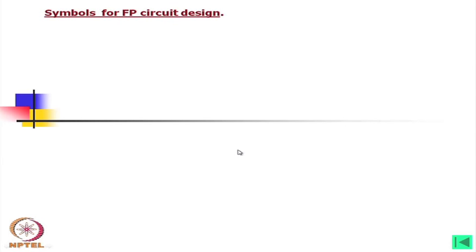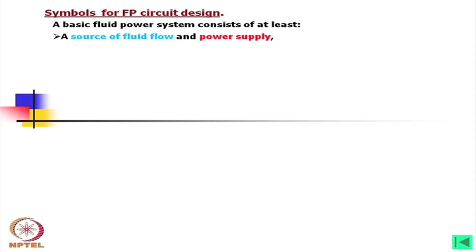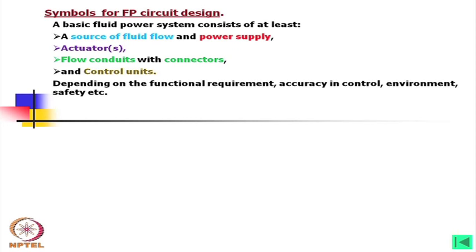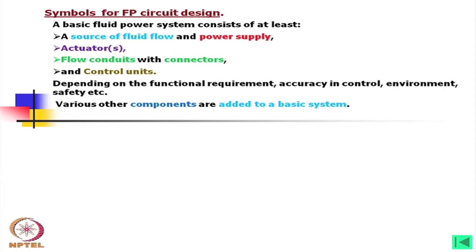Symbols for fluid power circuit design: what we have seen in the fluid power system consists of at least a source of fluid flow and power supply, actuators, flow conduits with connectors, and control units. Depending on the functional requirement, accuracy and control, environment, safety, etc., various other components are added to a basic system.